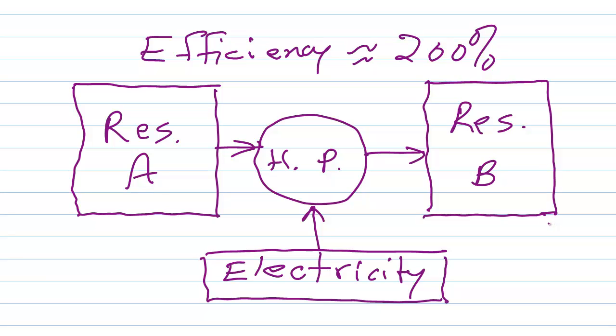The key word there is total. If we're talking about a heat pump with an efficiency of 200%, what they're really meaning to tell you is that the coefficient of performance is 200%.